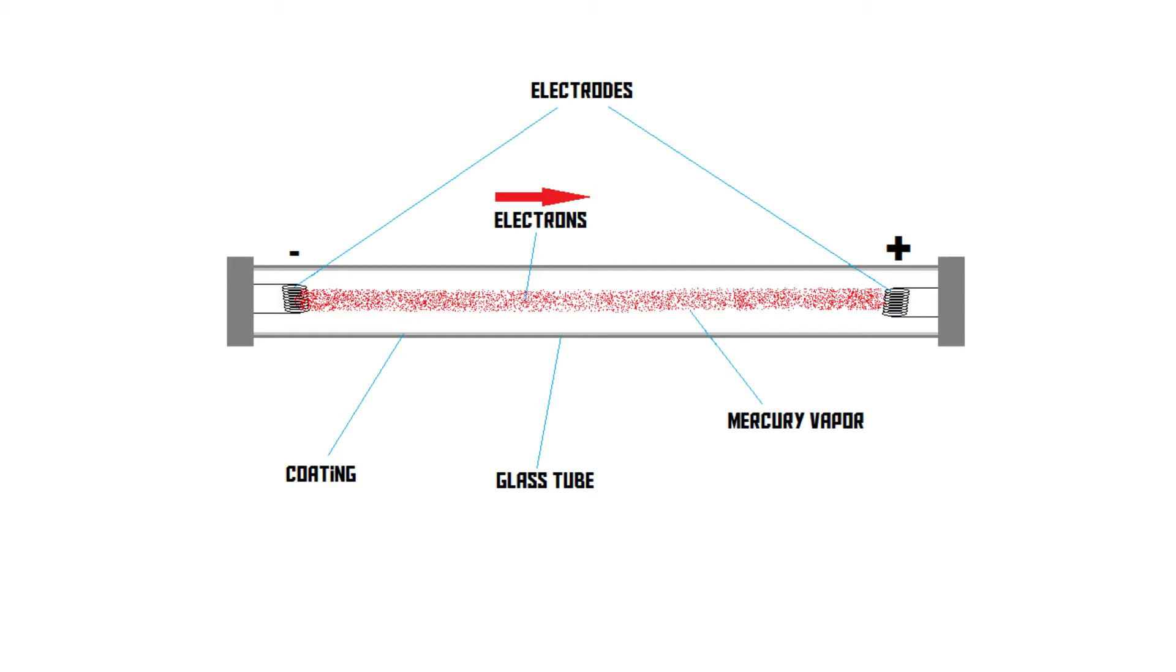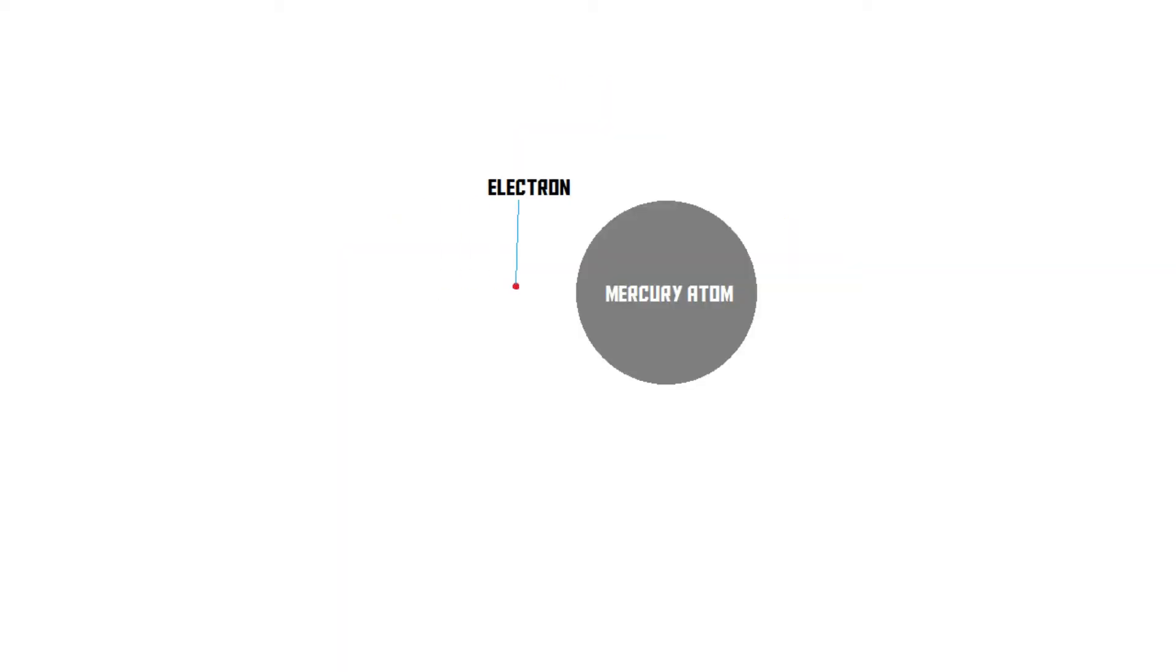Sometimes these flying electrons collide with mercury atoms inside the tube. When this happens, the mercury atom becomes excited. This means that there is now more energy inside the mercury atom than usual.